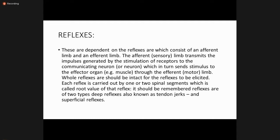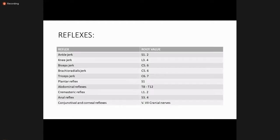Deep tendon reflexes include the ankle, biceps, triceps, and brachioradialis jerks. Superficial reflexes include cremasteric, anal, abdominal, and conjunctival reflexes. The root values are: ankle jerk S1-S2, knee jerk L3-L4, biceps jerk C5-C6, brachioradialis C5-C6, triceps jerk C6-C7, plantar reflex S1, abdominal reflexes T8-T12, cremasteric reflex L1-L2, anal reflex S3-S4, and conjunctival/corneal reflexes involve cranial nerves 5 and 7.